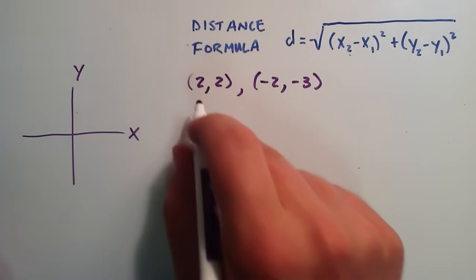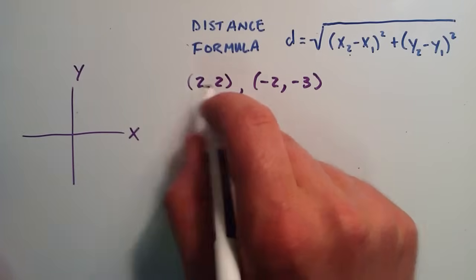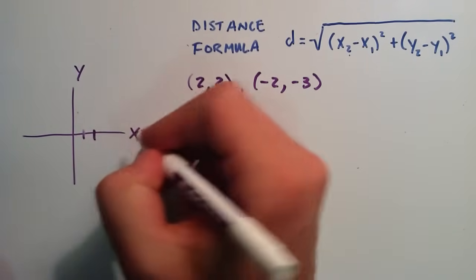So the point (2,2) is going to have an x component of 2 and a y component of 2. So for the x component of 2, we start at the origin and move over 1, 2 units in the x direction.